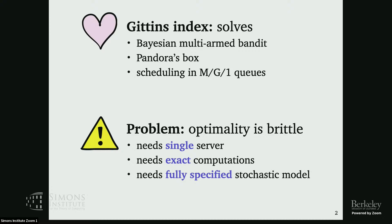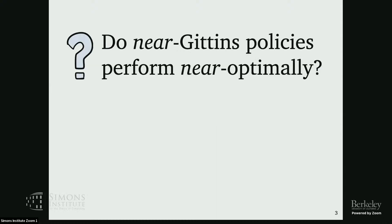And then the last thing is that all these settings have a fully specified stochastic model. One way to say this is that you can formalize this as an MDP where you know all of the parameters. Typically, just solving that MDP is too expensive, which is why we care about things like the Gittins index. But what if we don't have full knowledge of all the parameters? All of these questions are related to: do near-Gittins policies have near-optimal performance?